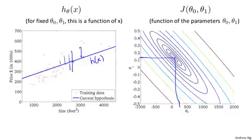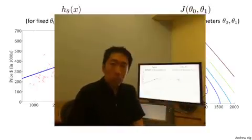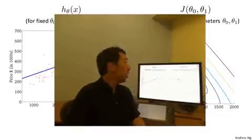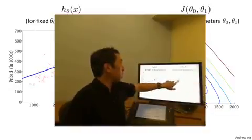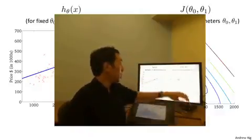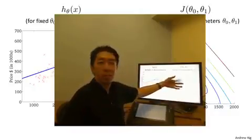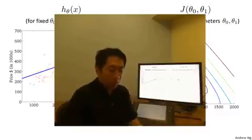So with these figures, I hope that gives you a better understanding of what values of the cost function j and how they are, and how that corresponds to different hypotheses, as well as how better hypotheses may correspond to points that are closer to the minimum of this cost function j. Now, of course, what we really want is an efficient algorithm, like an efficient piece of software for automatically finding the value of theta 0 and theta 1 that minimizes the cost function j. And what we don't want to do is to have to write software to plot out this point and then try to manually read off the numbers. That's not a good way to do it.